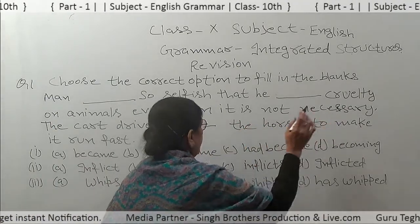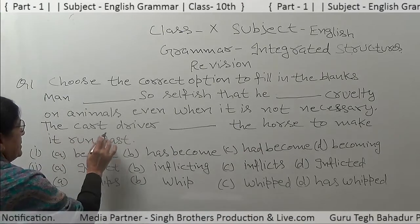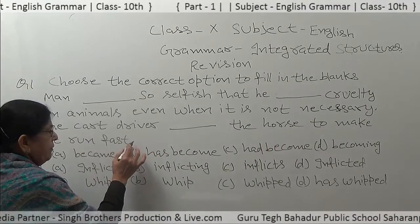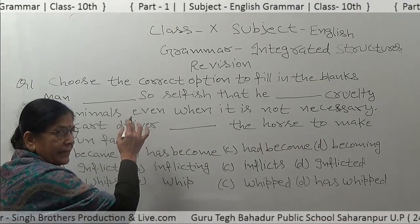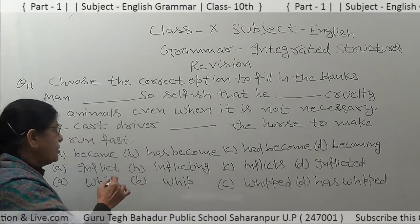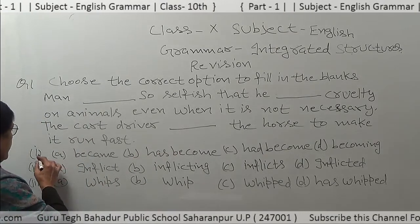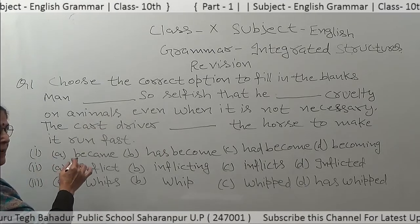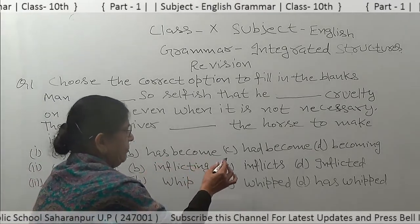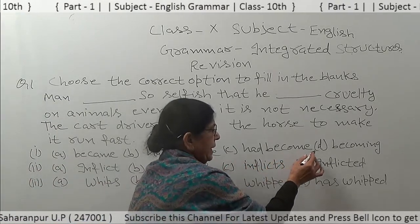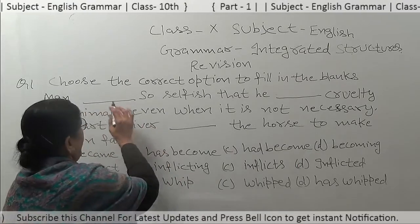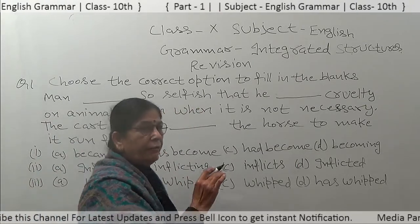The cart driver dash the horse to make it run fast. So this is the paragraph — like this, in your question paper there will be a paragraph and you have to fill the blanks. Options are given here. For the first blank, four options are given: first is 'became,' second 'has become,' third 'had become,' and fourth 'becoming.' So what we have to fill — man dash so selfish.